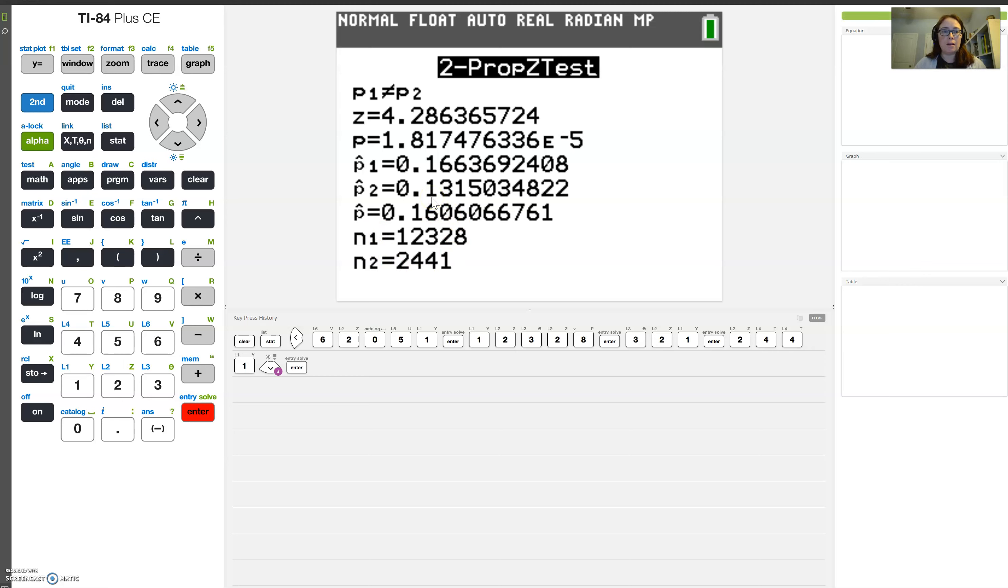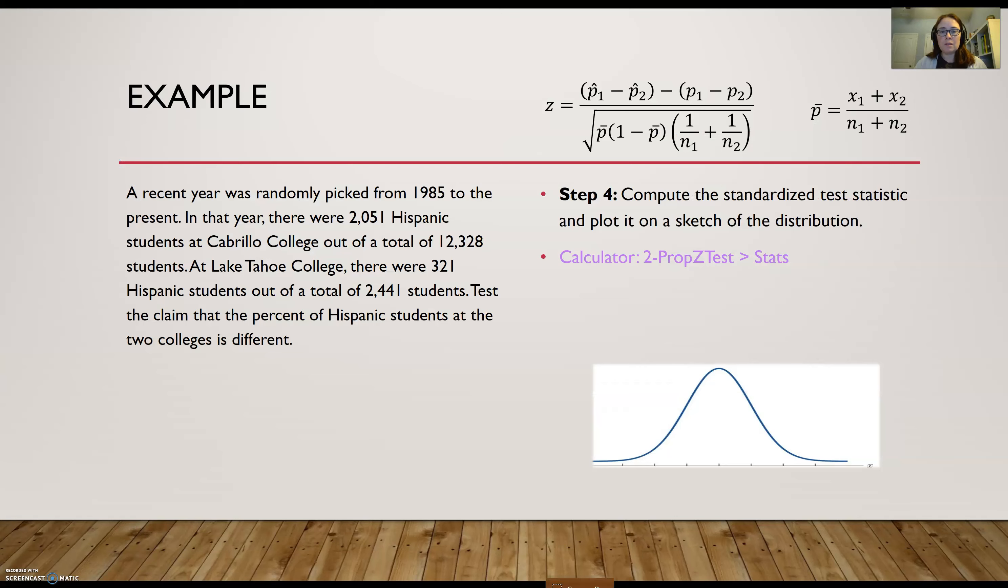So that's how I would do this in the calculator. Let's take care of step four and five by using this two-prop Z-test. In Excel, though, it's going to be a little different. First, I'm going to go ahead and calculate this p-bar.